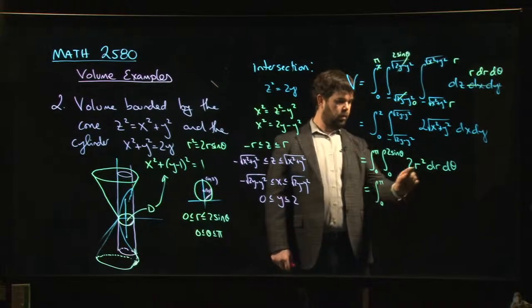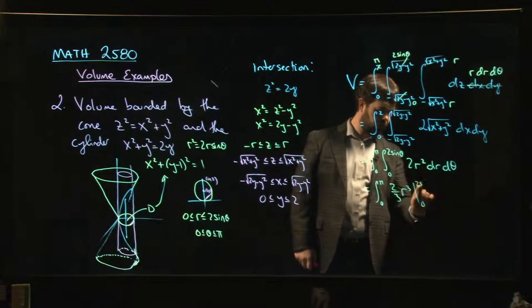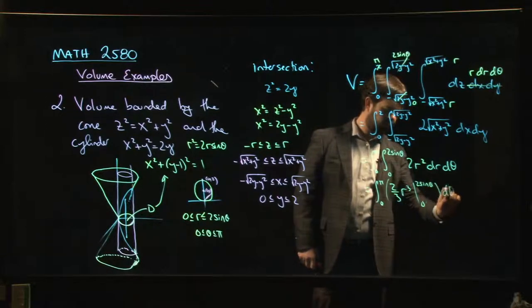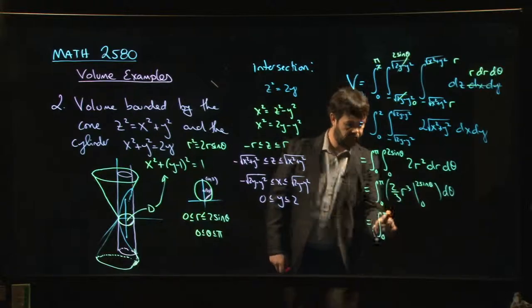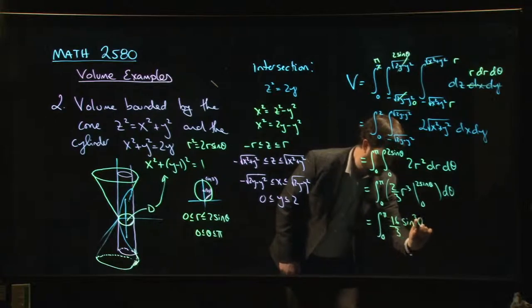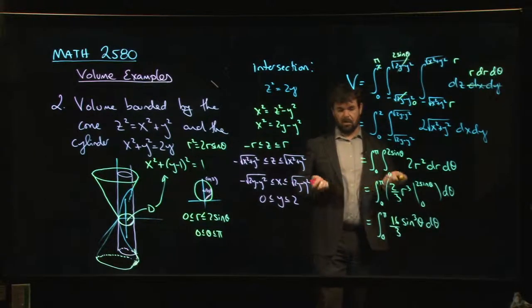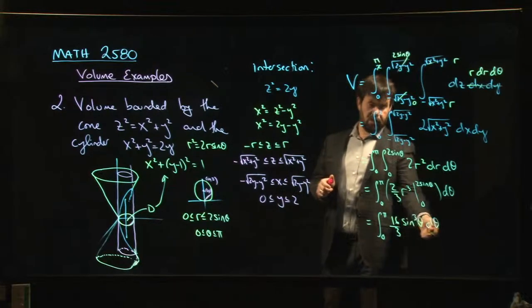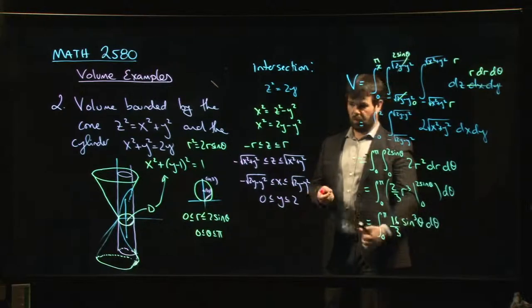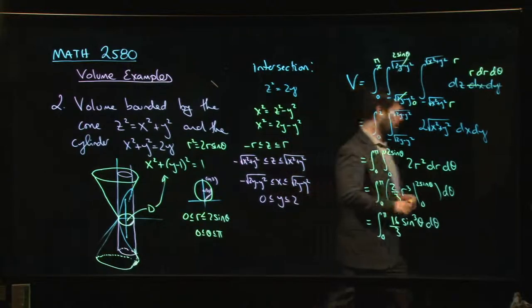So from 0 to pi, we're going to have 2 thirds r cubed, evaluating that from 0 to 2 sine theta. Then we have to do the theta integral. So 0 to pi, cubing that I'm going to get 8 times 2, so 16 over 3 sine cubed theta d theta. Now we've got it down to just a regular one variable definite integral that you can solve using Calc 2 techniques. I think we'll leave it at this because the video is already long enough. Of course, remember that what you can do with this is you peel off one sine theta, the sine squared that's left is 1 minus cos squared. Do a u substitution and you'll have it done. So we'll leave it at that. In the next video, we're going to introduce triple integrals a little bit more formally. And we'll look at a few more examples.